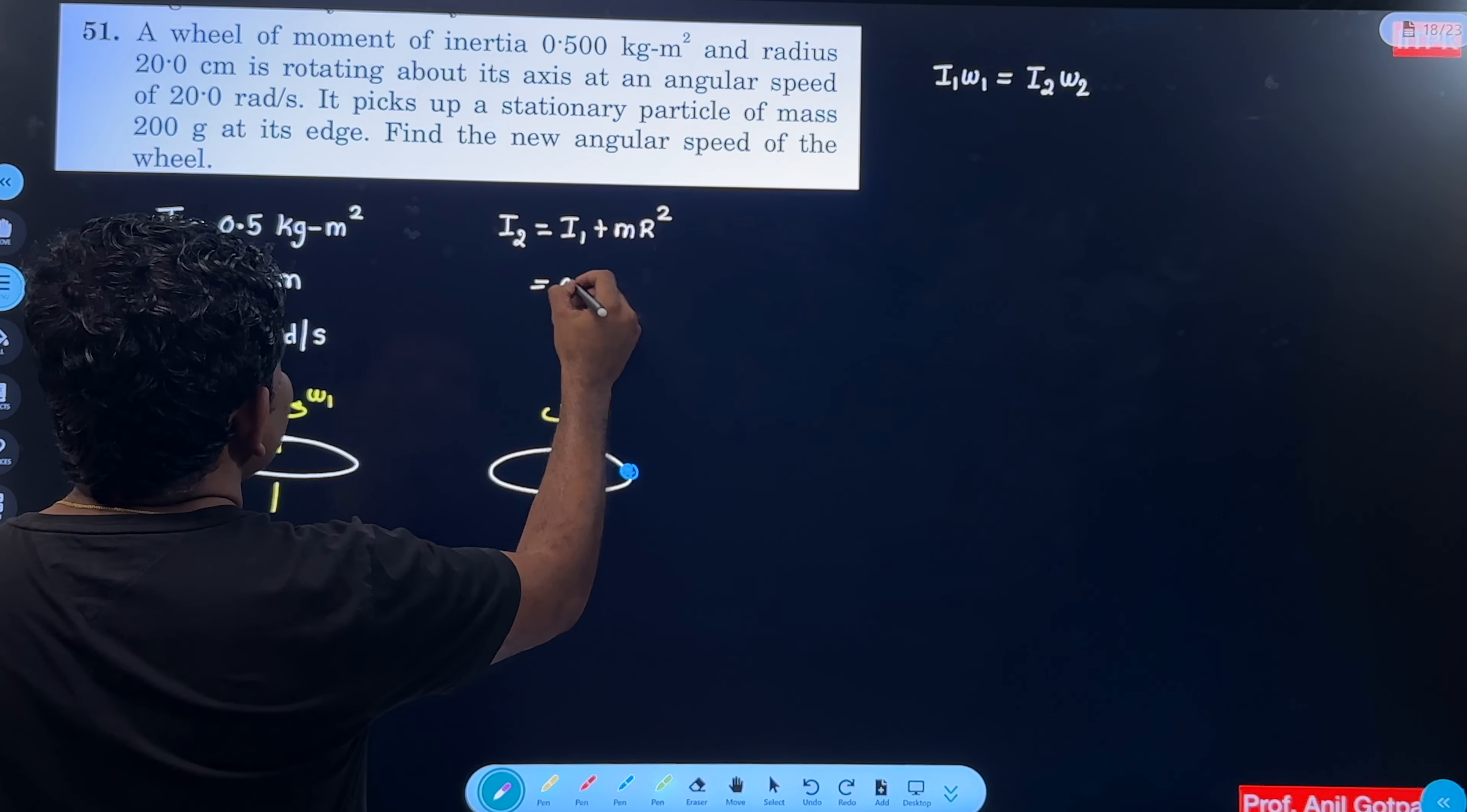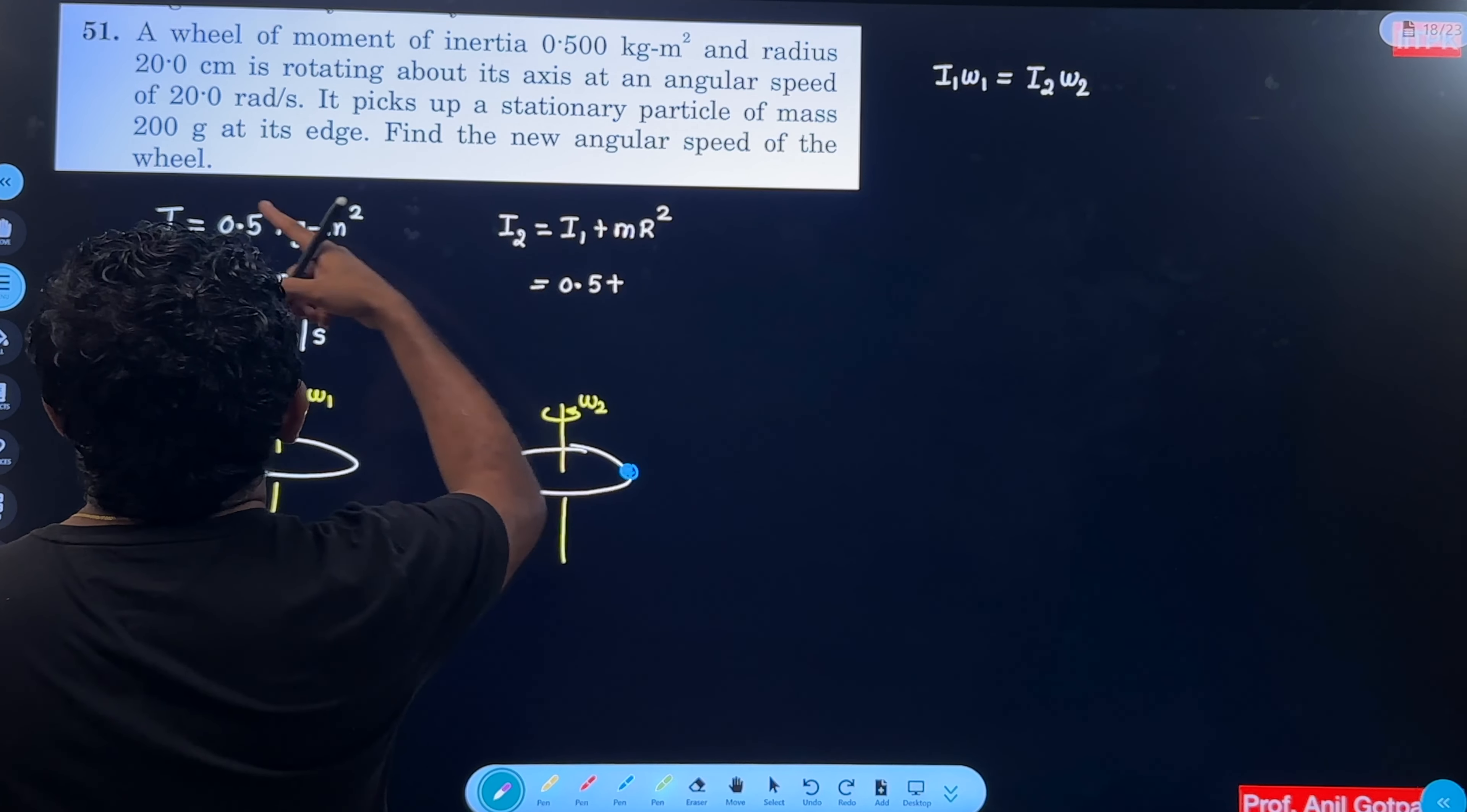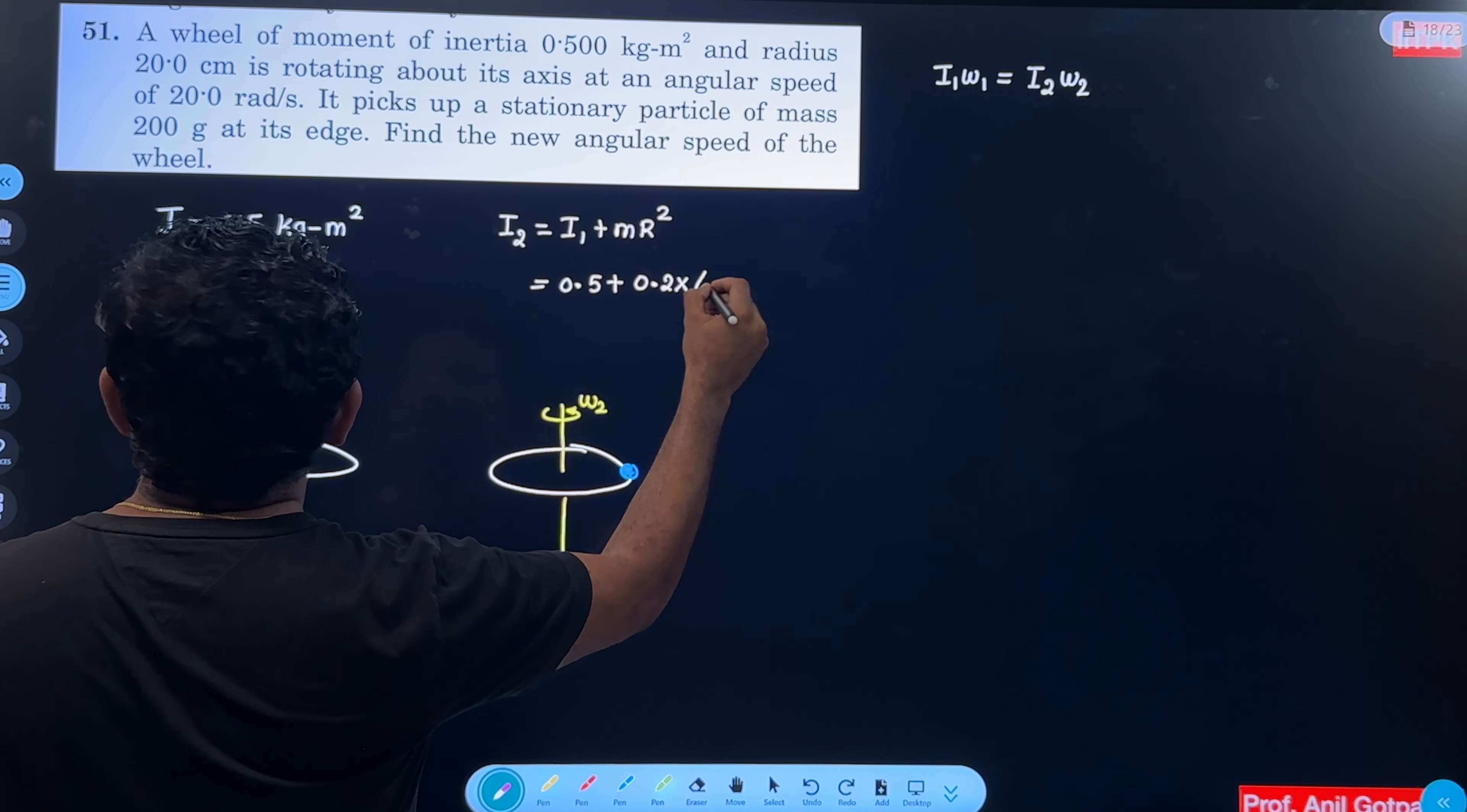So I1 is 0.5, plus mass of the particle is 200 gram. I2 is 0.5 plus 0.2 into r square.